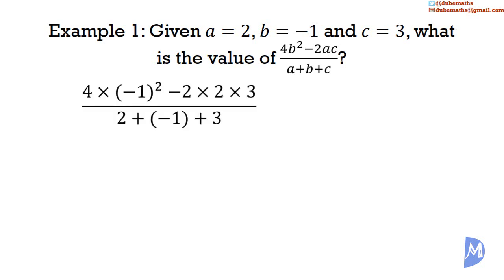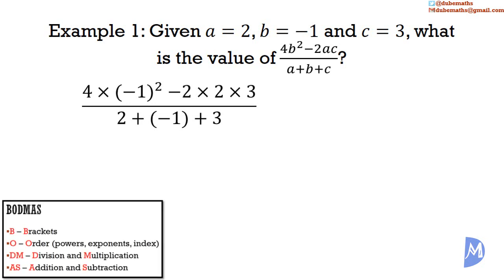We work out the value, remembering BODMAS. We do brackets first — we know the bracket here has a value of negative 1. Then order: we work out negative 1 squared first. Negative 1 squared is equal to negative 1 multiplied by negative 1. 1 multiplied by 1 is equal to 1, and a negative by a negative is a positive, so we get positive 1.